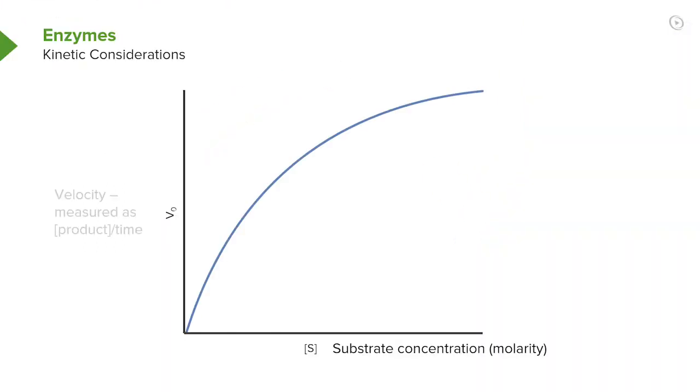When I get to a high substrate concentration, such as I see on the right side of the screen, I've got a high velocity. Makes sense. Low substrate, low velocity. High substrate, high velocity. I want you to remember that.